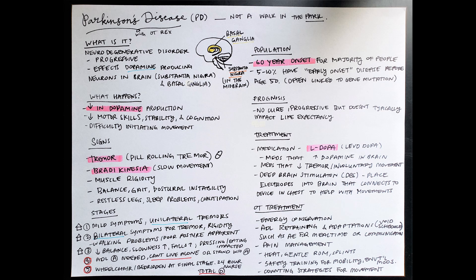Parkinson's disease is a neurodegenerative disorder, and it is progressive. Basically what happens is it affects our dopamine-producing neurons in our brain, specifically in our substantia nigra and our basal ganglia, which both have to do with our voluntary movements and coordination. So you can see I drew a not-so-great brain just to show you where these two are located.